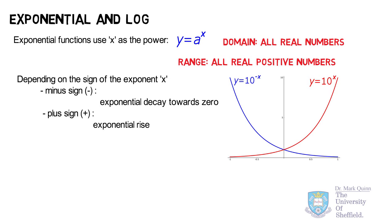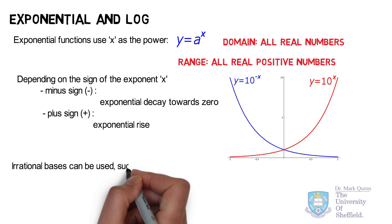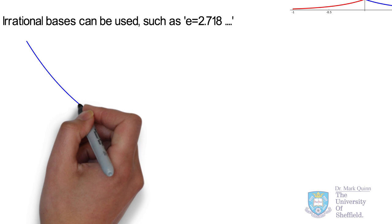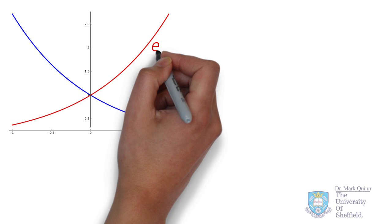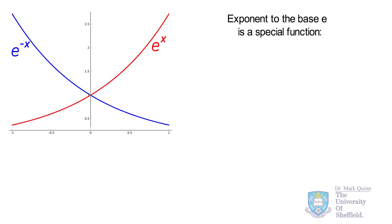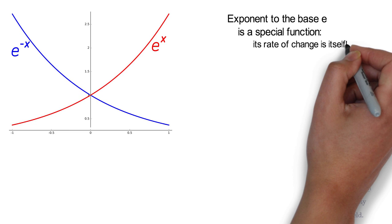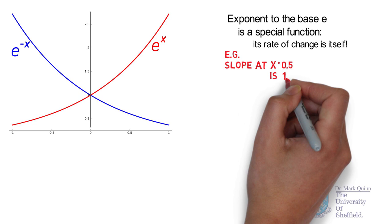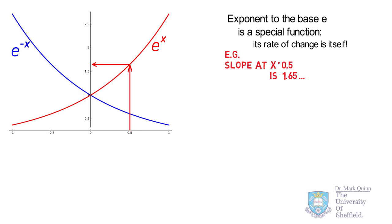A special choice for the base is to use the irrational number e. Like pi, e has an infinite number of digits; the first four are 2.718. Using e as the base, we can have a positive or negative exponential. What is special is that the exponential to the base e has a value equal to its rate of change. In our future lecture on differentiation, we will see that the derivative of eˣ is simply eˣ. For example, the value of eˣ at 0.5 is 1.65, which is exactly the value of its rate of change or slope at that point.